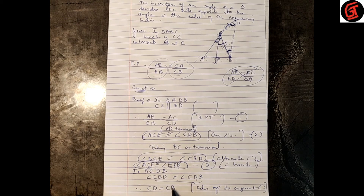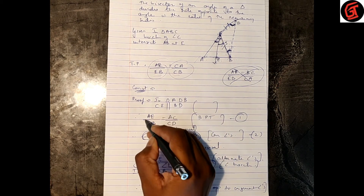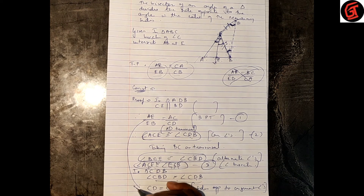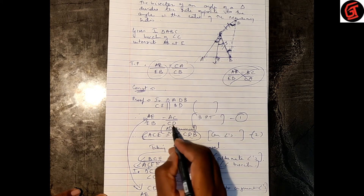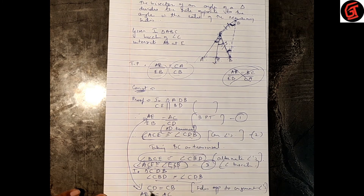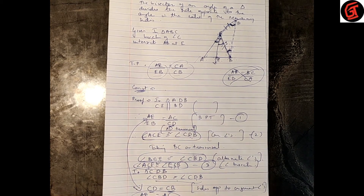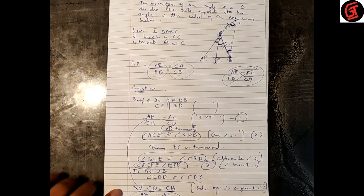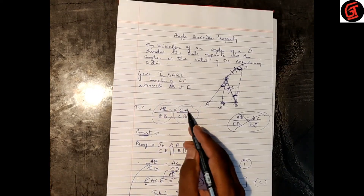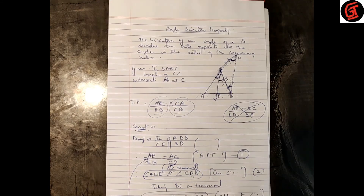CD is equal to CB. Now taking statement 1 — AE upon EB is equal to AC upon CD — in place of CD we write CB, since CD equals CB. Therefore AE upon EB is equal to AC upon CB. Hence proved.